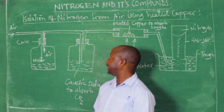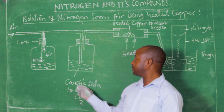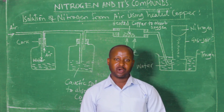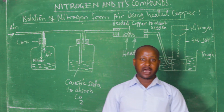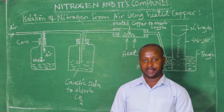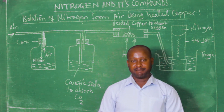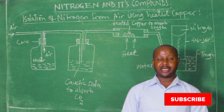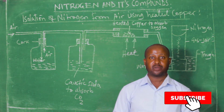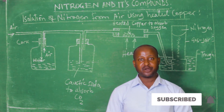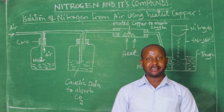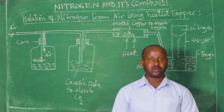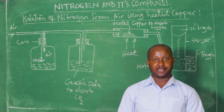The displaced air then comes into the second wash bottle, which contains caustic soda. The purpose of the caustic soda is to remove carbon dioxide gas by reacting with it to form sodium carbonate.